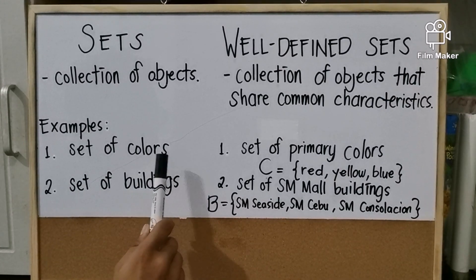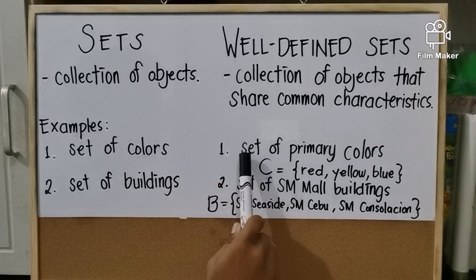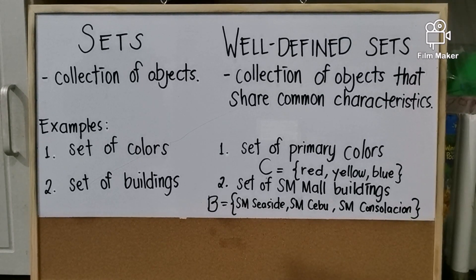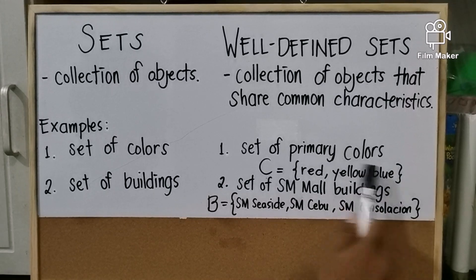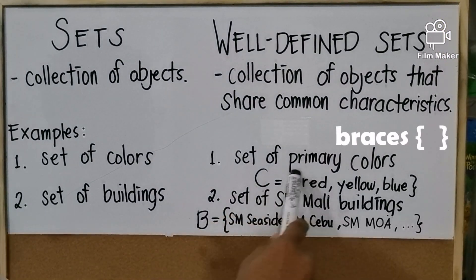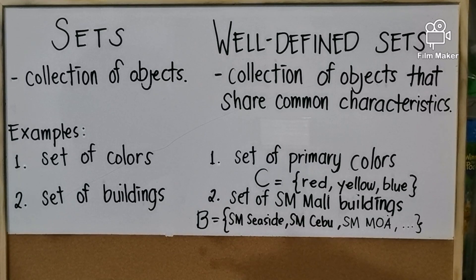For example, for a set we have 'set of colors,' while for a well-defined set we have 'set of primary colors,' and these are red, yellow, and blue. To write that one, we denote a set using a capital letter — you can choose any letter to represent your set. I choose capital letter C because of the word colors, so C is equal to — we use braces to group the elements and commas to separate them. If a set contains many elements, we often use three dots.